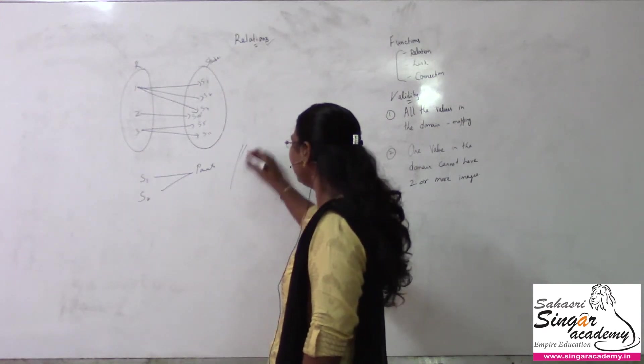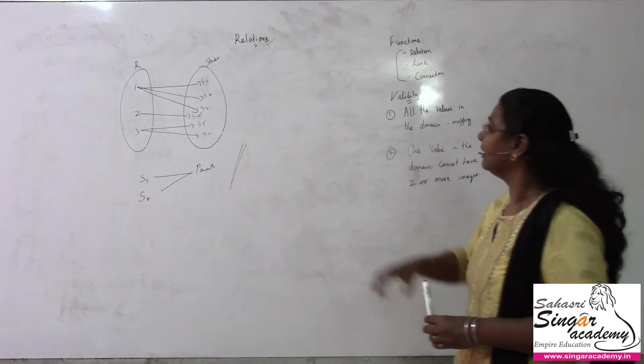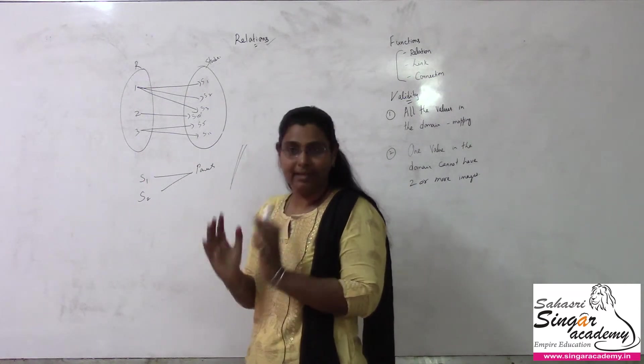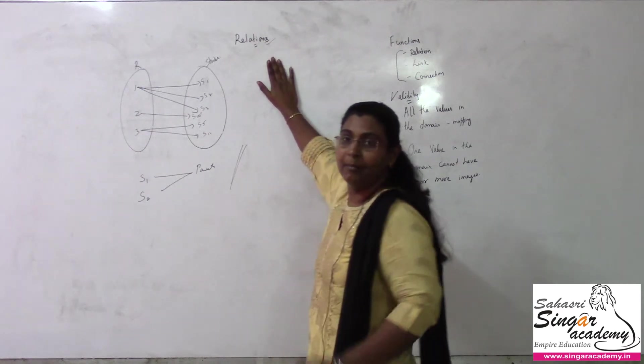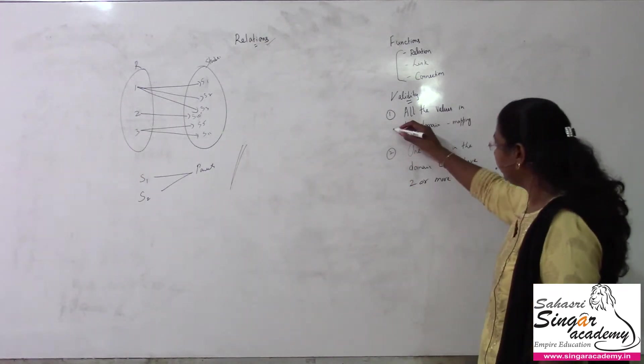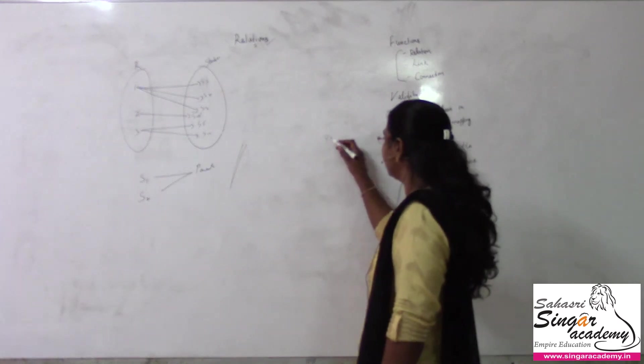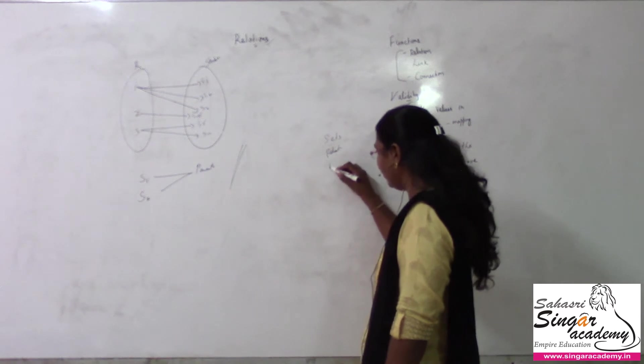This is complete logical reasoning. If we're talking about relations, there is a set here, there is a set here. If you're able to club or link them, this is nothing but a relation. Within relations, the most specific case happens to be a function. If we're talking about the ordering, we discussed sets, then relations, then functions.